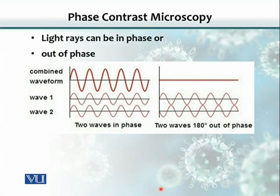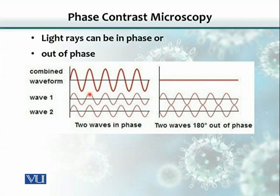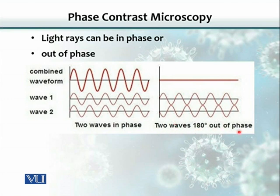Another one is phase contrast microscopy. It also does not use any stain, and we can study the cells in vitro as live cells. The principle behind phase contrast microscopy is that light travels in waves. If two waves follow each other in all aspects — a peak follows a peak, and a trough follows a trough — we call these two waves in phase with each other. If the trough of one wave is superimposed on the peak of the other, these two waves are 180 degrees out of phase with each other.